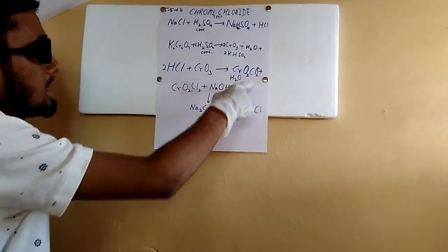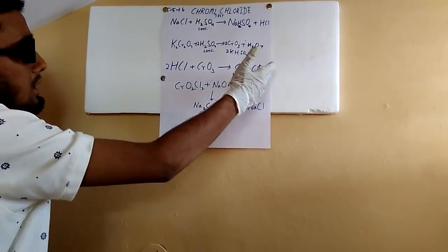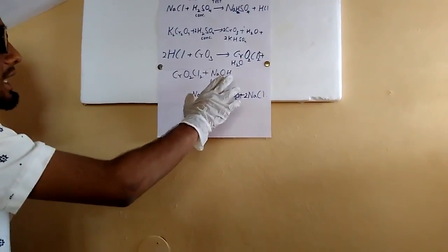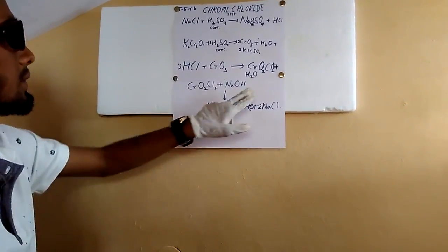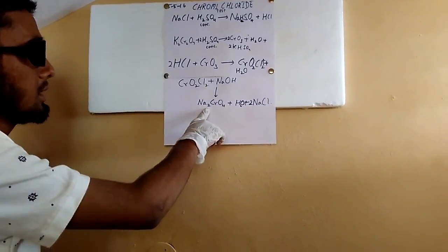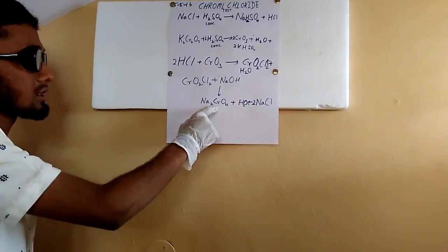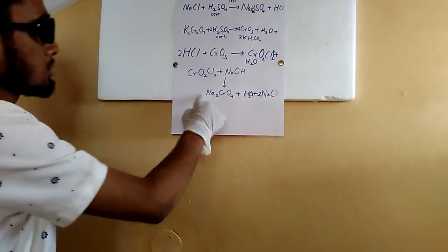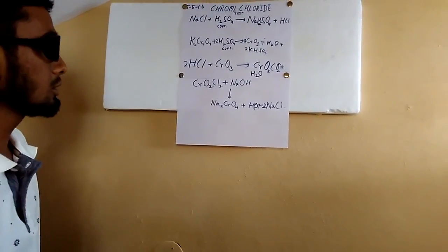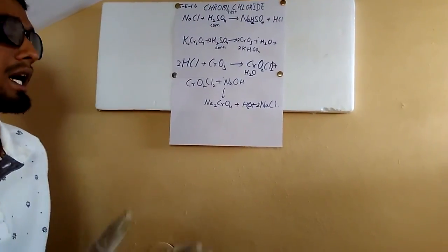In the second step, this chromyl chloride reacts with sodium hydroxide to give us sodium chromate — Na2CrO4 — which is the yellow colored compound that gave the solution its yellow color. There is also some sodium chloride formed as a byproduct.